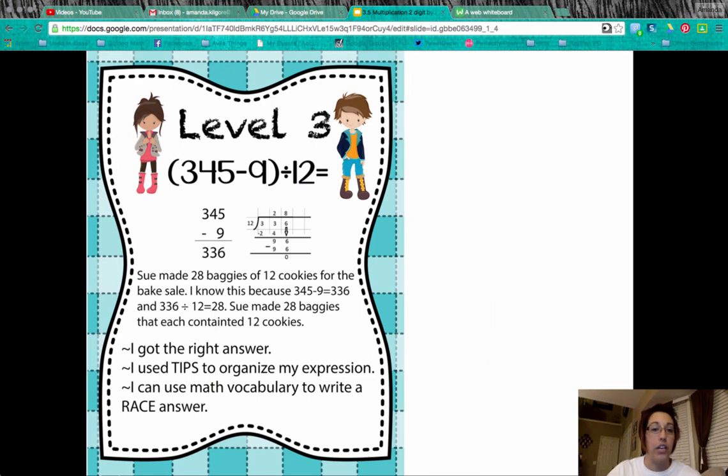So let's look at a level three for this word problem. This person has used tips. They have a problem that they're working. I can see that they've started to use race because here's their work for citing it. And then I've got an explanation down here. It starts with a restatement of the question. So Sue made 28 baggies of cookies for the bake sale. Restatement and answer right there. I know this because 345 minus the nine cookies that they eat equals 336. And 336 divided by 12, which is a dozen, equals 28.